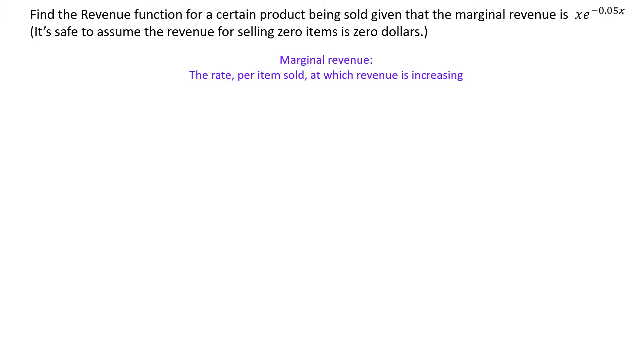I'll give you an example. If we take the marginal revenue formula for this particular problem, let's plug in a couple of numbers just to get a sense for what this means. If you plug 20 into this, you get a result of $7.36 per item. That means once you're at the sales level of 20 items, your revenue is changing at $7.36 per item sold.